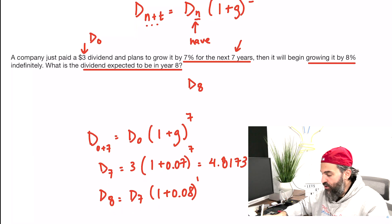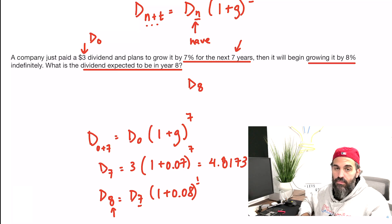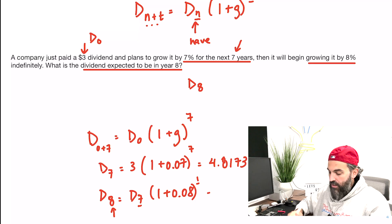If you want to be more technical, 7 plus 1 will give you 8. I think the logic is a little bit better in this case. So I'm going to multiply this by 1.08. So my 8th dividend is 5.20.